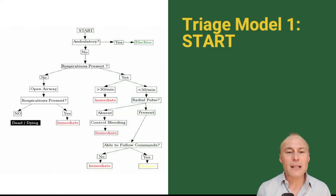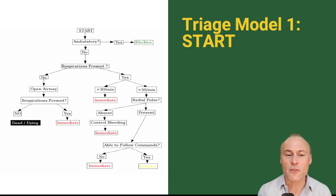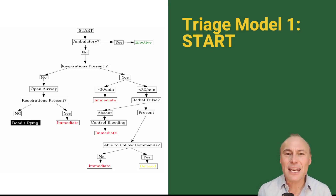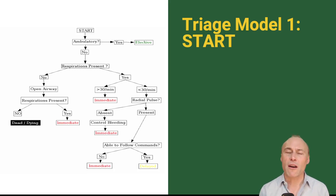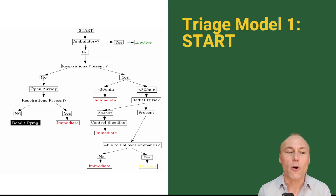One of the first models of triage many of us are exposed to is the START triage, which stands for Simple Triage and Rapid Treatment. This is an excellent choice in cases where capacity is limited and we have to decide how to do the most benefit for the most people. The protocol is actually pretty simple — first the question is: can you walk? If you can walk, you are moved into the category of green or elective, and they walk away from the scene to be treated later.